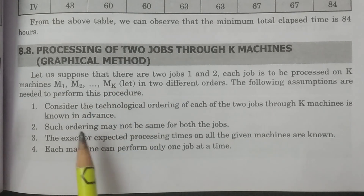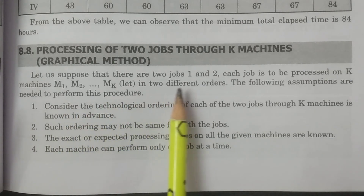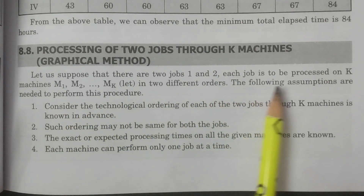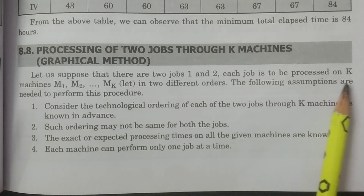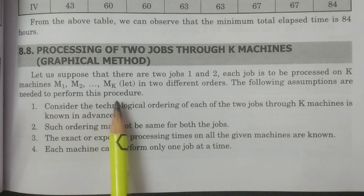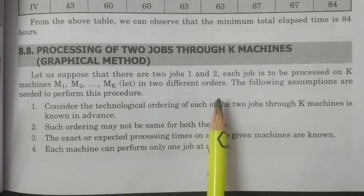Consider there are two jobs, job one and job two, and each job is to be processed on K machines M1, M2, and so on up to K, in two different orders.